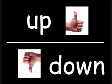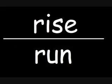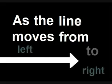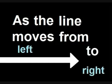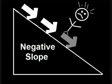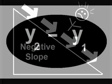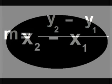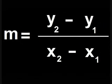The slope, it's the rise over the run — the distance up or down, divided by the distance side to side. As the line moves from left to right, positive slopes go up, negative slopes go down. Y2 minus Y1 goes in the numerator, X2 minus X1 in the denominator.